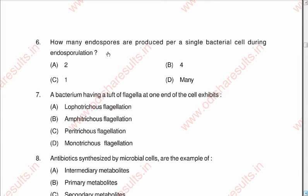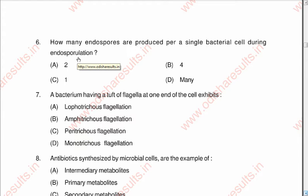Question number six: How many endospores are produced by a single bacterial cell during endosporulation? A: 2, B: 4, C: 1, D: many. The correct answer is C: one. Always remember that endosporulation is not a method of bacterial reproduction but it is a method of bacterial survival in unfavorable conditions.